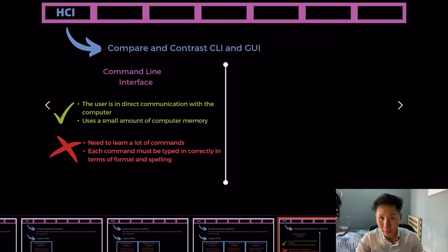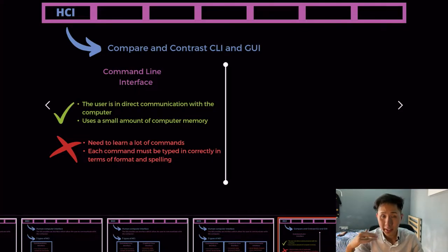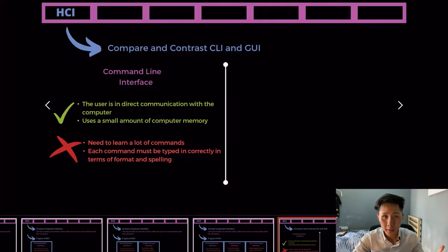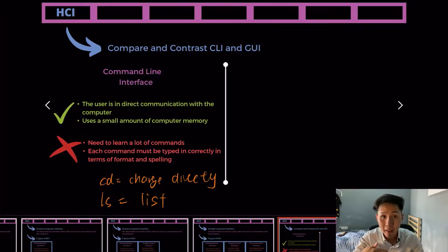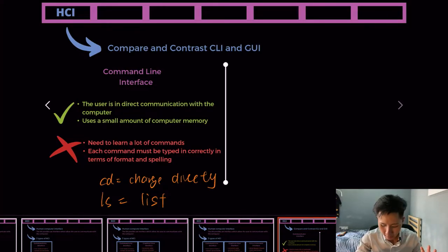Let's compare and contrast CLI and GUI. For the command-line interface, since we are in direct communication with the computer, it's very convenient and uses a small amount of computer memory. The downside is that you need to learn a lot of commands, such as CD for change directory and LS for listing. You can check it out on YouTube — this is not the main focus of our syllabus so we won't go deep into it.